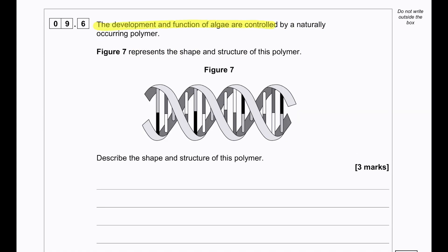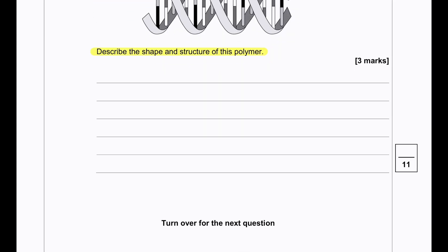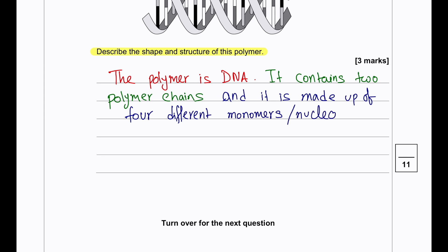The development and function of algae are controlled by a naturally occurring polymer. Figure 7 represents the shape and structure of the polymer. Describe the shape and structure of this polymer. In the diagram we can see that this is a molecule of DNA. And a molecule of DNA is made from two polymer chains. And we know that DNA is made from four types of nucleotides. So we can say that this polymer is made from four different monomers or four different types of nucleotides. For example, it can be C, G, A, T. And also we can see the structure is double helix.